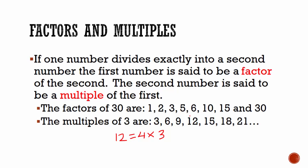So to conclude, if you're looking at two numbers and the first number is exactly divisible by the second number, then the first number is a factor of the second number, and the second number is a multiple of the first.